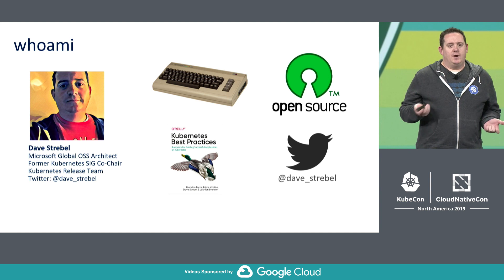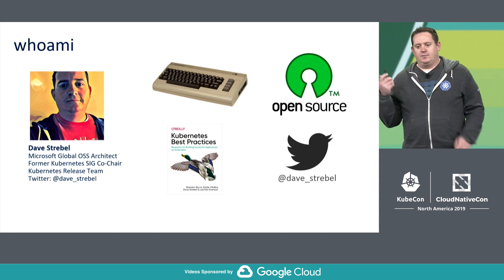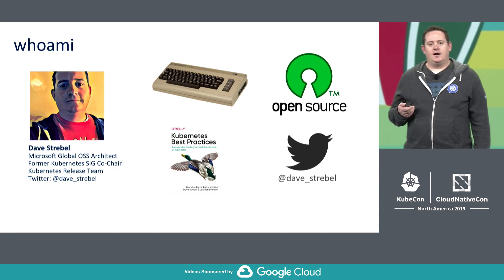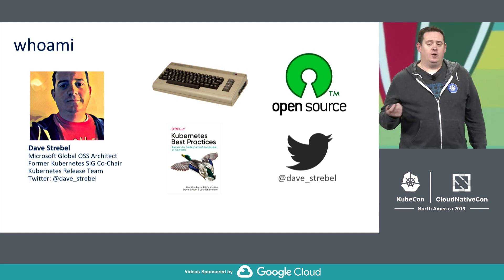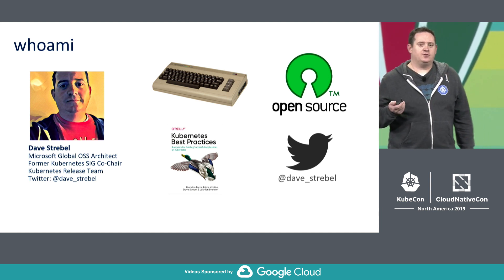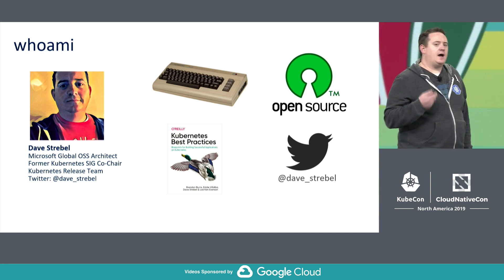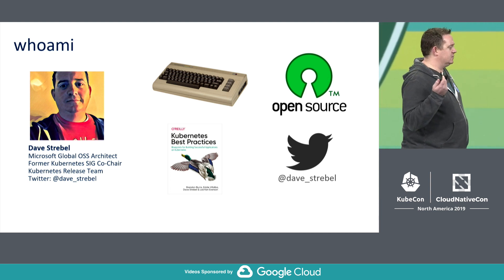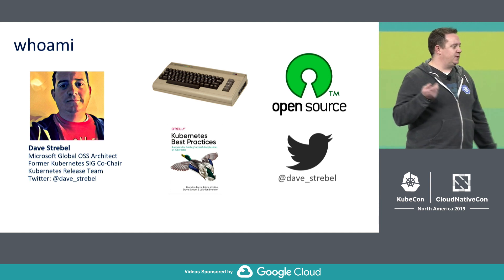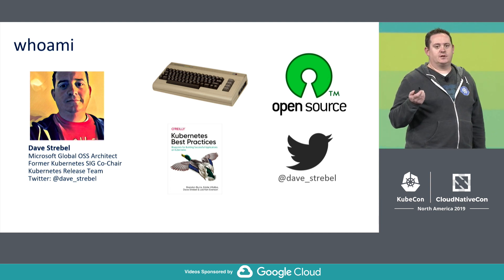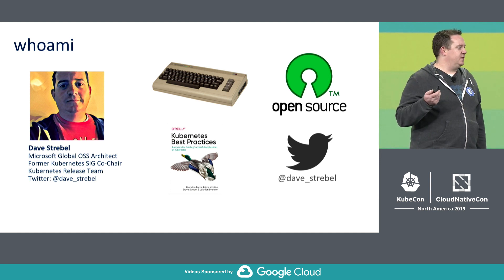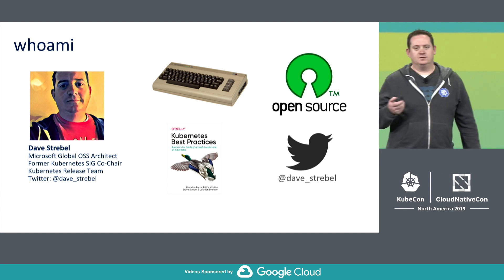So who am I? My name's Dave Strabel. I'm a cloud native architect at Microsoft. I also just recently co-authored the Kubernetes Best Practices book and worked on the release team for Kubernetes.